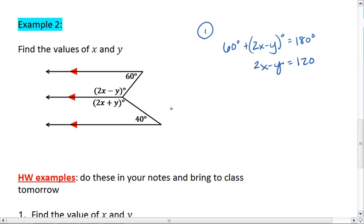Now let's look at our bottom two parallel lines. We can extend these and notice that these lines are also cut by a transversal. And that the 40 degree angle and the 2x plus y degree angle are also consecutive interior angles, meaning they are supplementary.